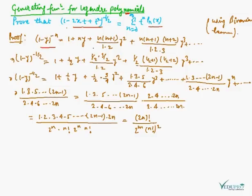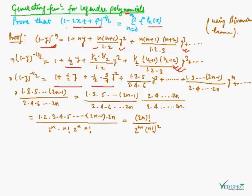Proof: We use the binomial expansion. (1 minus y) to the power minus n is equal to 1 plus ny plus n(n+1) upon 1·2 times y squared plus dot dot dot. In this expansion we replace n with 1/2, so (1 minus y) to the power minus half equals 1 plus (1/2)y plus (1/2)·(3/2) upon 2 times y squared, giving: 1 plus (1/2)y plus (1·3)/(4) y squared plus (1·3·5)/(2·4·6) y cubed plus dot dot dot.